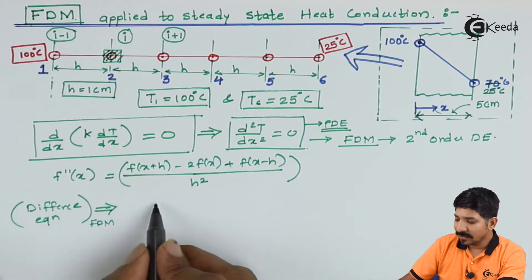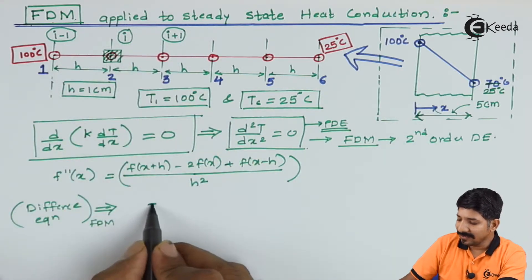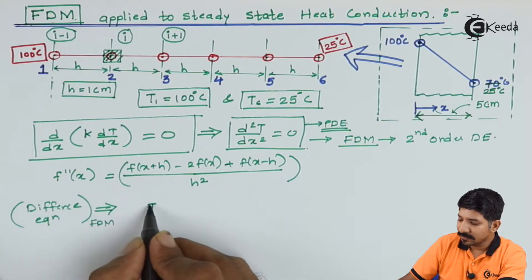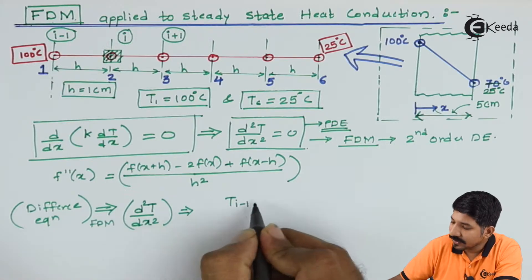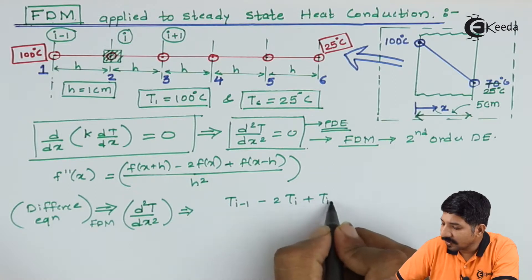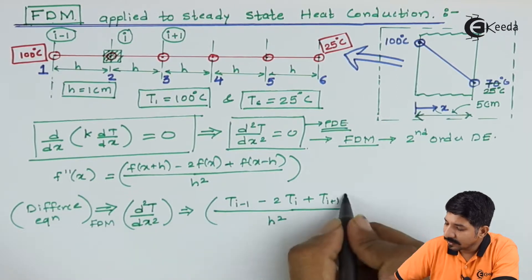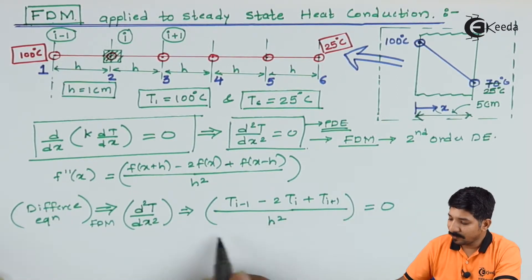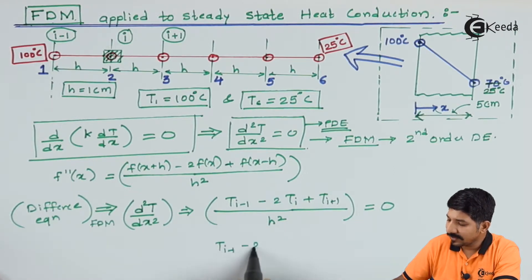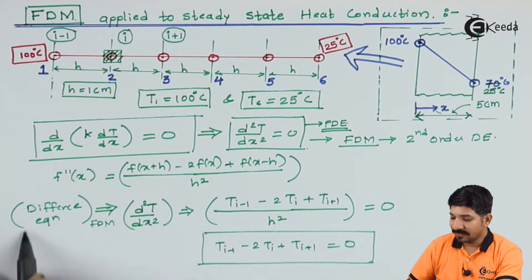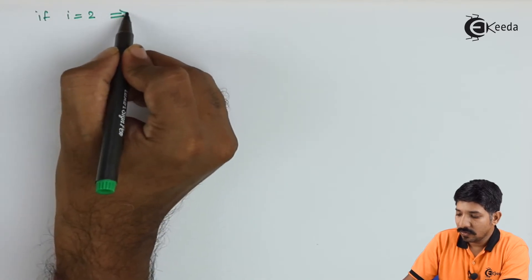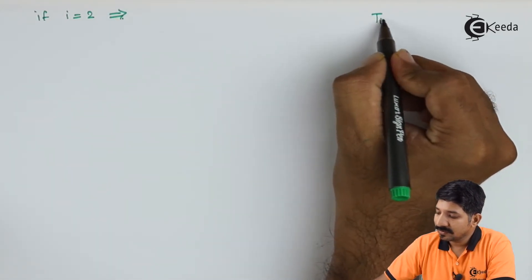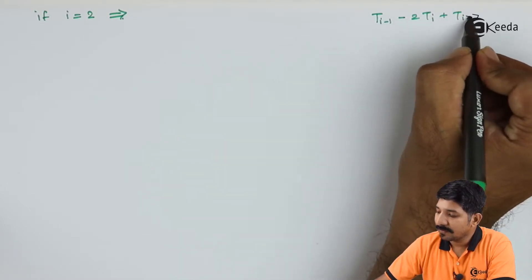Let us apply it for a three-node stencil. The second derivative d²T/dx² can be written as T(i-1) minus 2T(i) plus T(i+1) divided by h squared, set equal to zero. Simplifying, this gives T(i-1) minus 2T(i) plus T(i+1) = 0. This is the difference equation we are working with, and we can now write it down for various values of i.